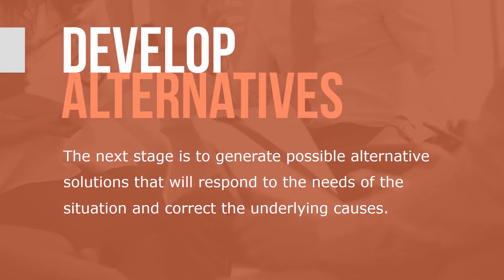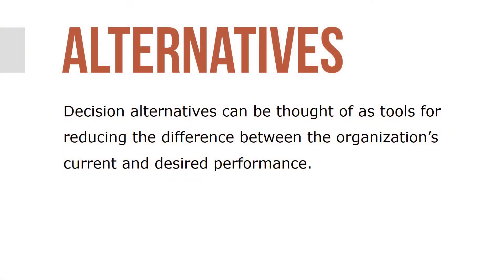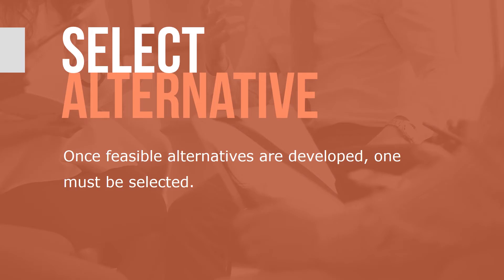The next stage is to generate possible alternative solutions that will respond to the needs of the situation and correct the underlying causes. Decision alternatives can be thought of as tools for reducing the difference between the organization's current and desired performance. Smart managers tap into the knowledge of people throughout — and sometimes outside — the organization for alternatives. Once feasible alternatives are developed, one must be selected; managers try to select the most promising course of action that best fits the overall goals and values of the organization.